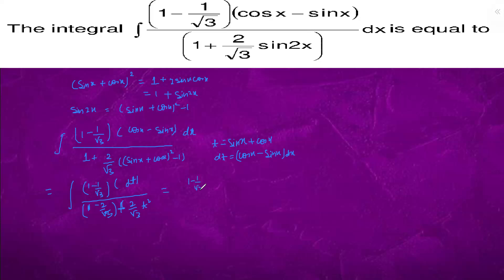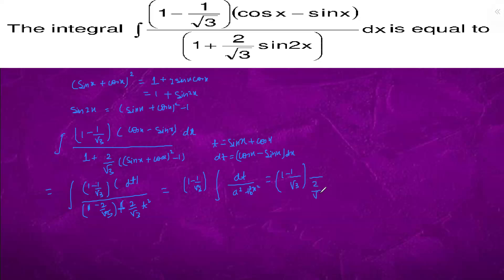We take 1 minus 1 by root 3 common. In the form of a square plus x square, here b square equals 2 by root 3, so we take 2 by root 3 common first. We took out 2 by root 3. So integration of dt upon 2 by root 3 common.